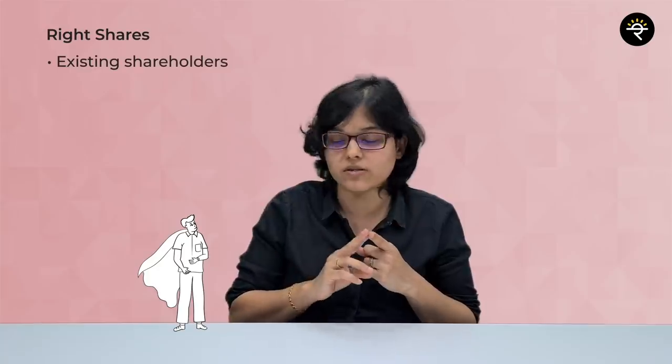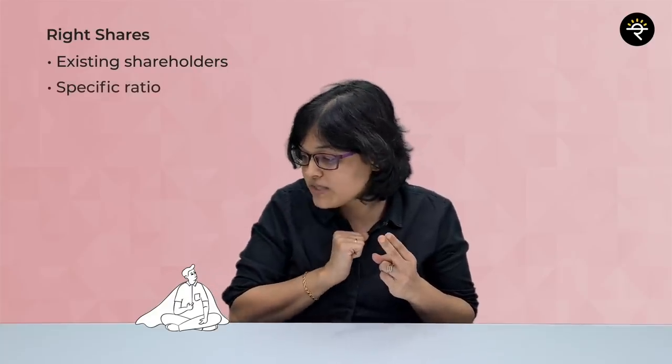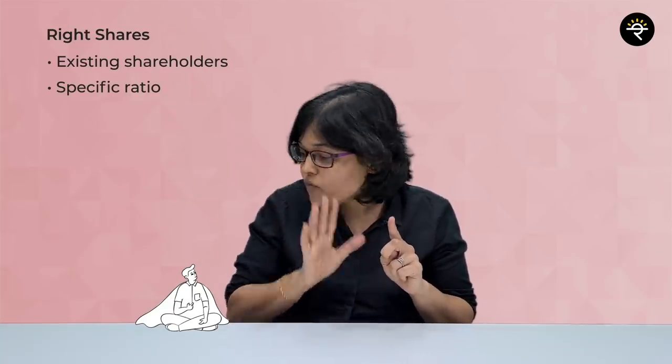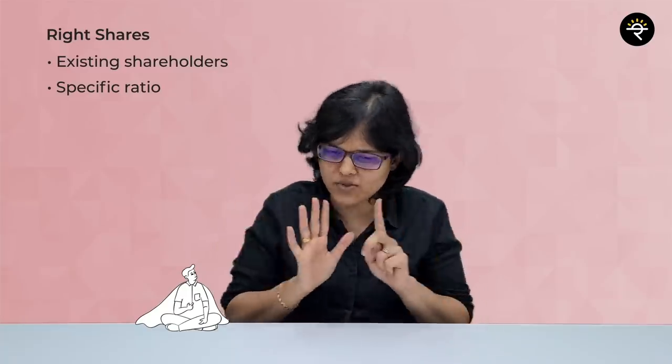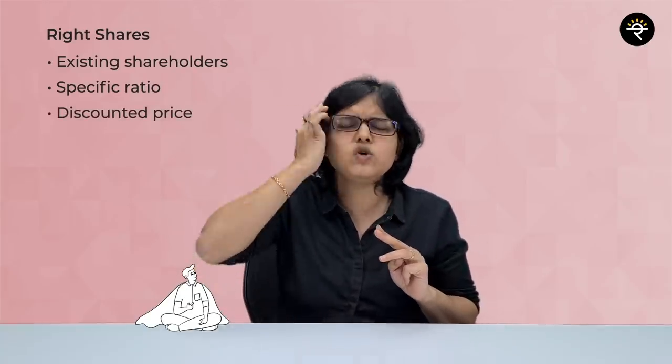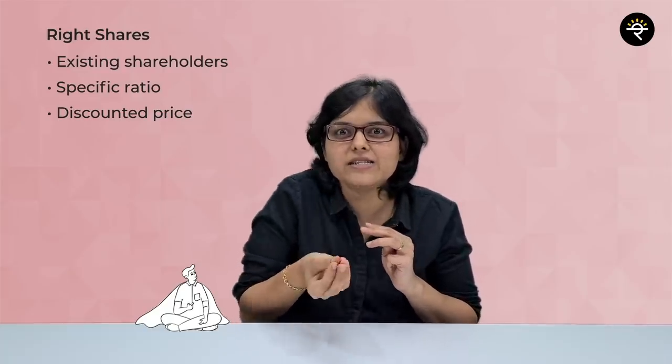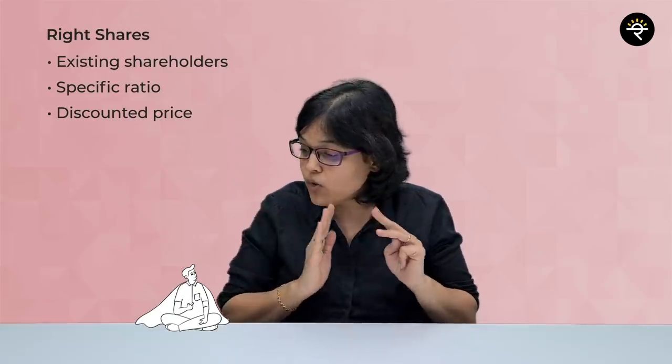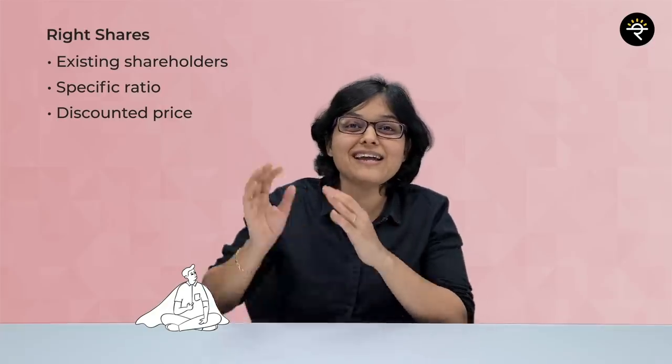What are right shares? First, right shares are given only to existing shareholders whose name appears in the shareholders register as on the record date. Second, they are issued only in a specific ratio announced by the company — for example, 1:5 means you get one right share for every five shares held. Third, you are eligible to get right shares at a discounted price compared to the market price — if the share trades at 700, you might get it at 550 or 600.